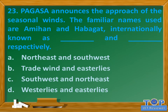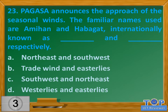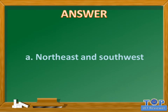Question number 23. PAGASA announces the approach of the seasonal winds. The familiar names used are Amihan and Habagat, internationally known as blank and blank respectively. A. Northeast and Southwest. B. Tradewind and Easterlies. C. Southwest and Northeast. D. Westerlies and Easterlies. Answer: A. Northeast and Southwest.